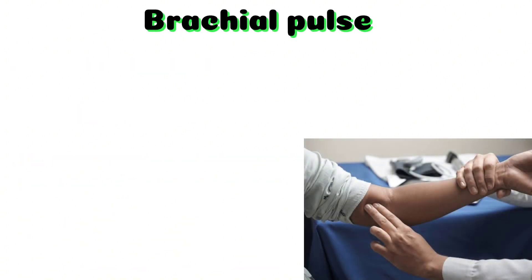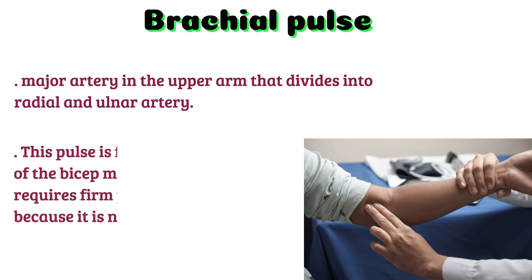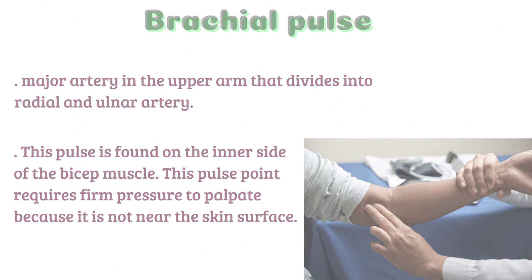Brachial pulse: this is a major artery in the upper arm that divides into the radial and ulnar arteries. This site is used to measure blood pressure and as a pulse check site on an infant during CPR. The brachial pulse is found on the inner side of the bicep muscle. This pulse point requires firm pressure to palpate because it is not near the skin surface.